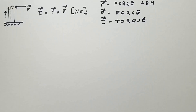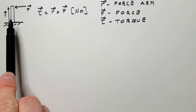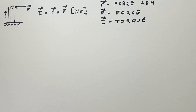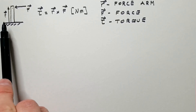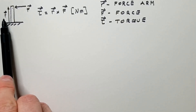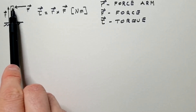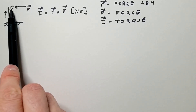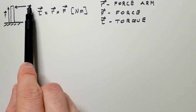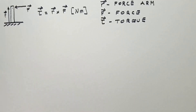We will demonstrate the concept of torque using an example of a building. Here we have Earth's surface and a building rising above it. The height of the building is R, and there is a force exerted on the top of the building — let's say, for example, a wind gust — and that force is F.